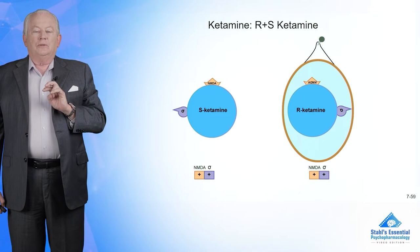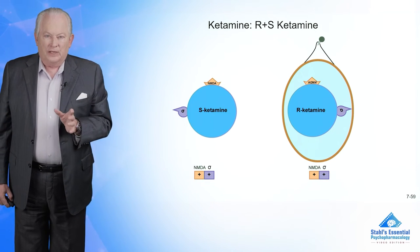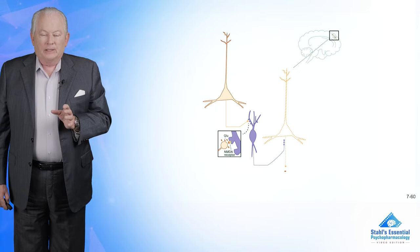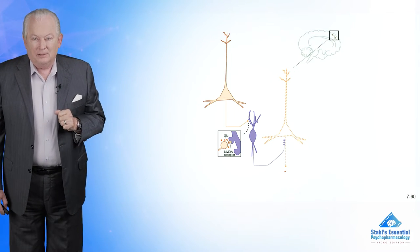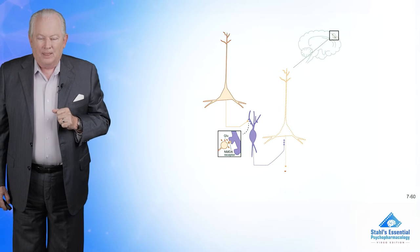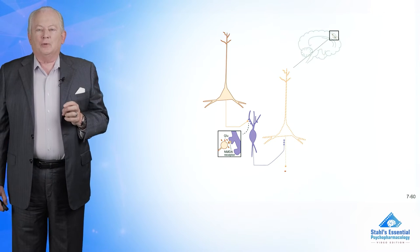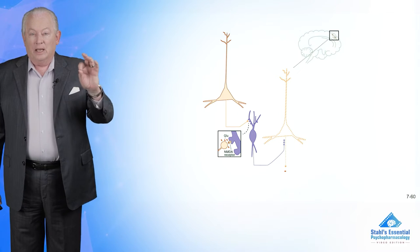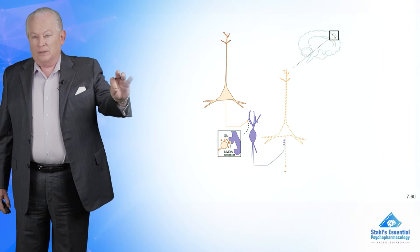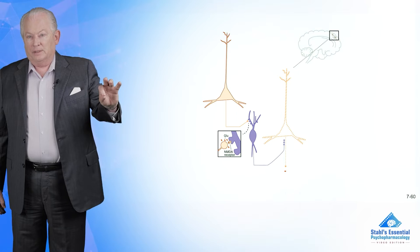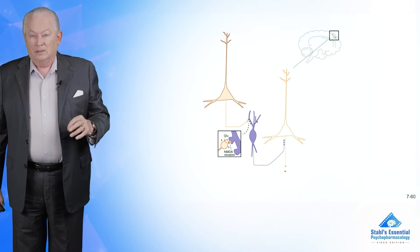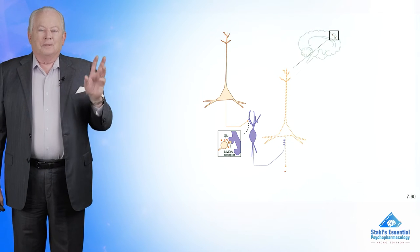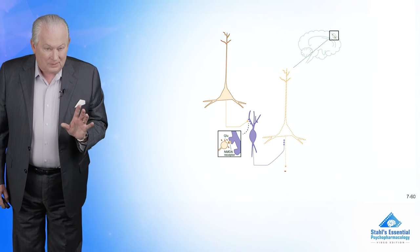So how do these versions of ketamine work? And the short answer might be a burst of glutamate is one hypothesis. How does that happen? I thought these were blockers of glutamate, and indeed, the NMDA receptor is blocked by ketamine, N-methyl-D-aspartate. Dumb name, I know, I'm sorry, but that's what it is. It's a type of glutamate receptor.